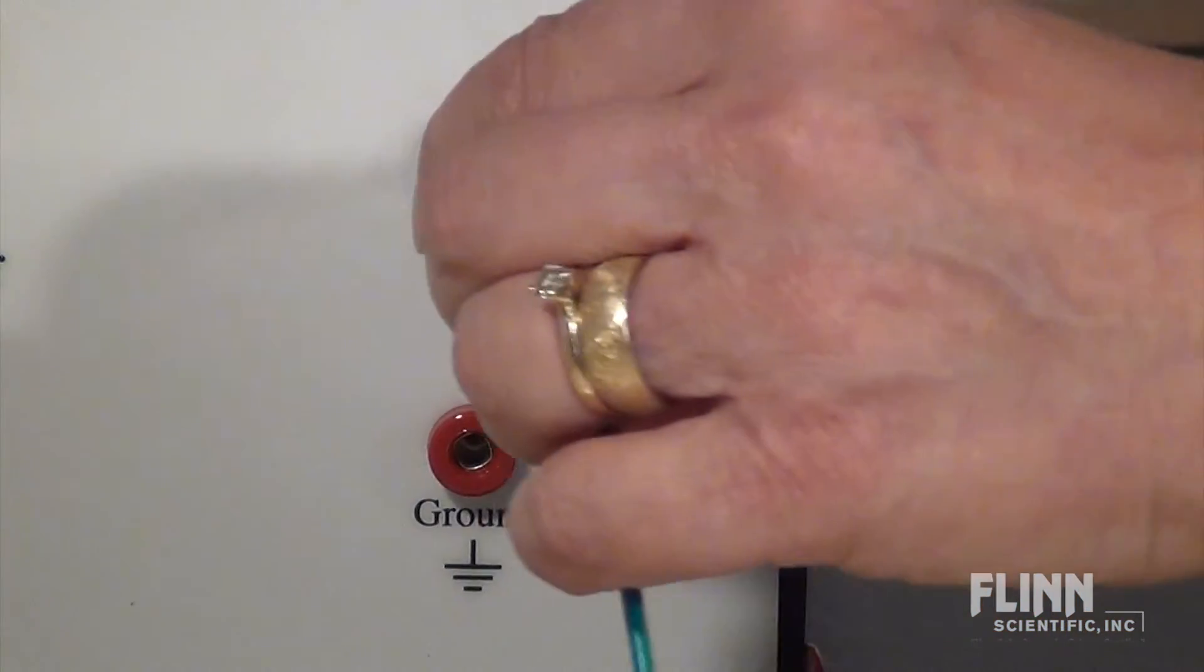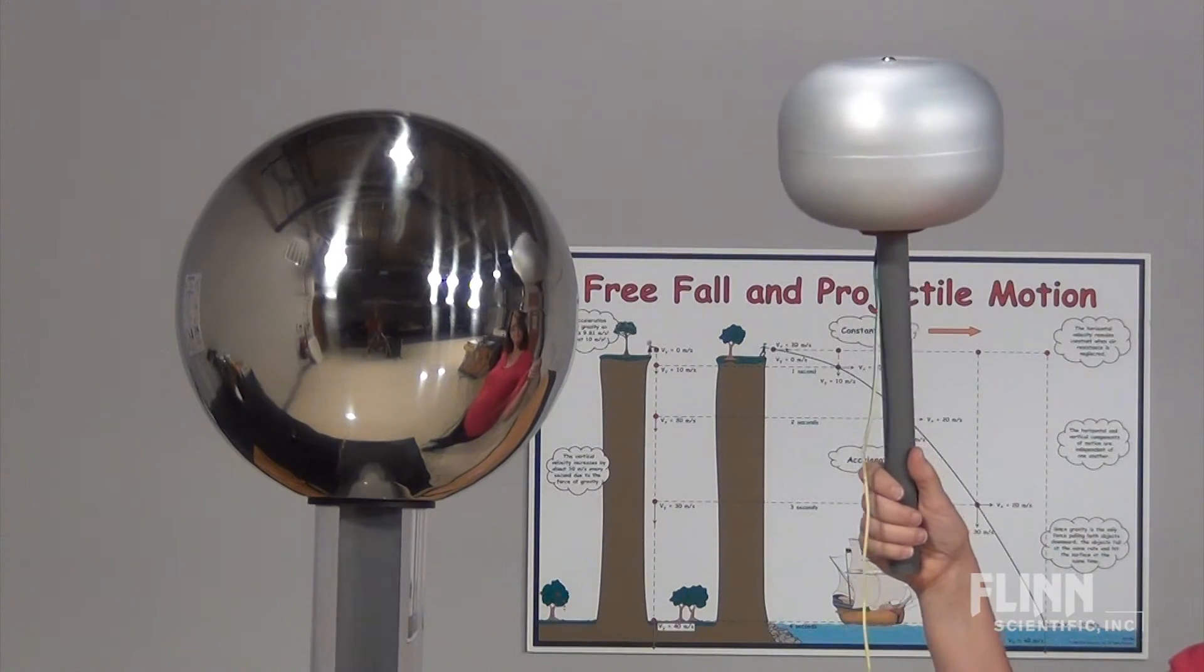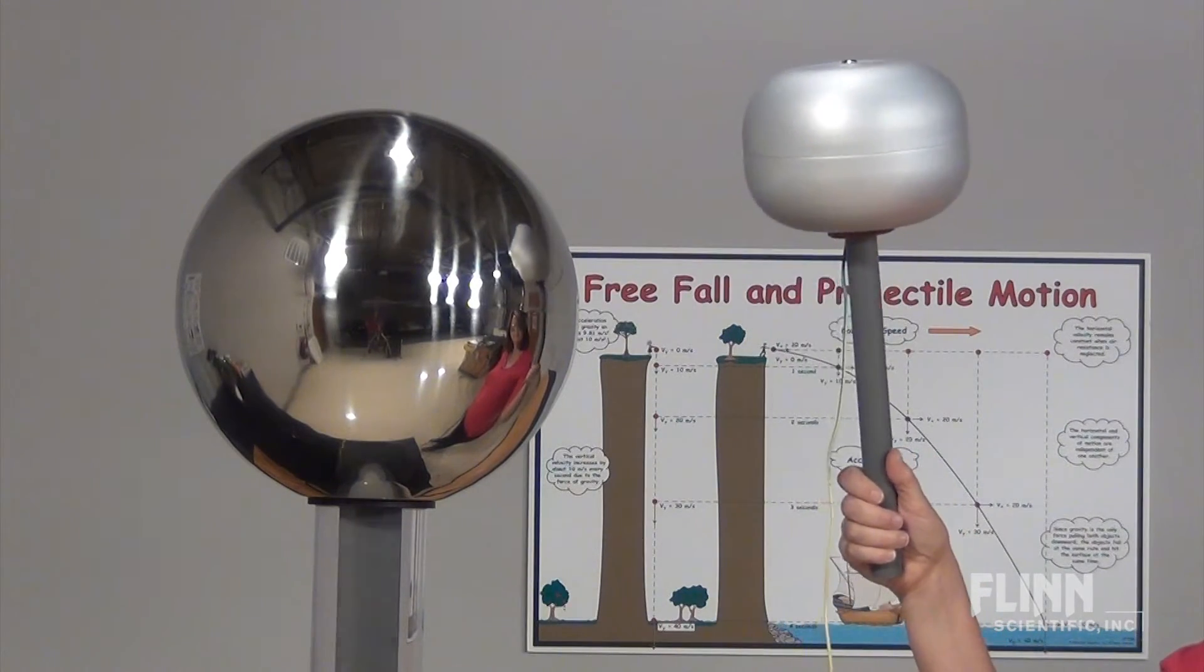First, connect a discharge electrode to the ground terminal on the base of the generator and test the generator to make sure it is building up a good charge.